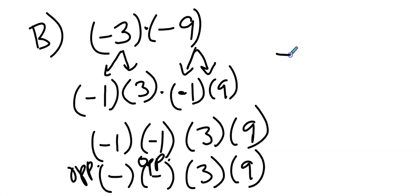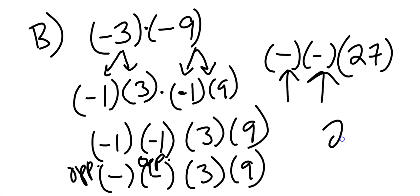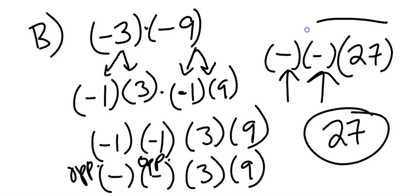And then we could read this as the opposite of the opposite of 3 times 9. Well we know that 3 times 9 is 27. So the opposite of the opposite of 27. Well that would be positive 27. Think about it. The opposite of 27 is negative 27. And the opposite of a negative 27 is positive 27. So a negative 3 multiplied by a negative 9 is equal to positive 27.